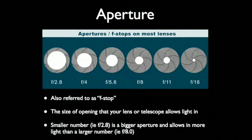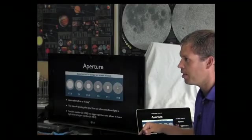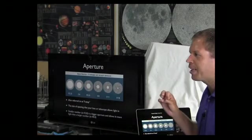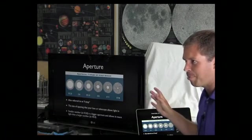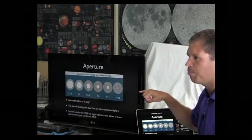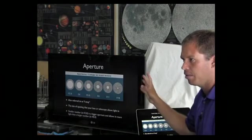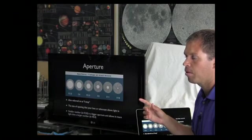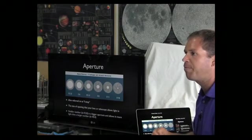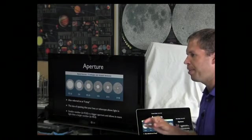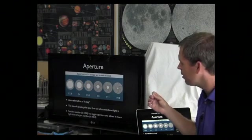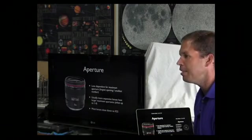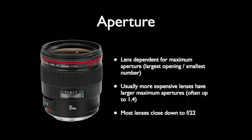They do make lenses that are f1, which is very rare. Stanley Kubrick used an f0.95 to shoot a scene in one of his movies by candlelight without external lighting. However, you'll rarely find lenses faster than f1.4. Canon makes a good line of f1.4 lenses — an 85mm is one of them — and they also make a 50mm at f1.2, while the 35mm and 24mm are f1.4 and above.